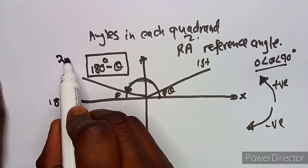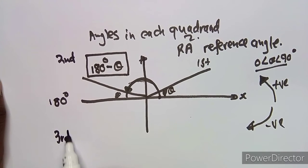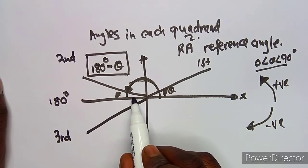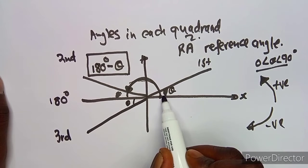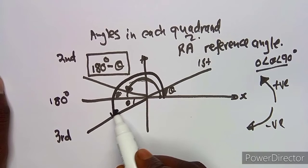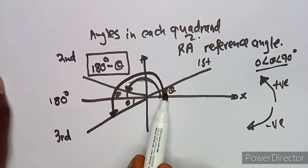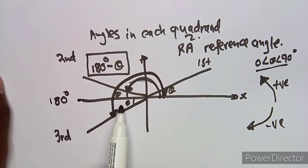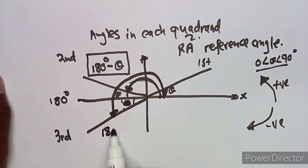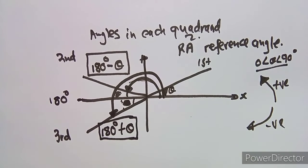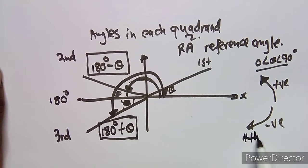In the third quadrant, the small theta is your reference angle, and the actual angle is taken from the positive horizontal axis going in this direction. We have passed 180 degrees and we include theta as part of the angle, so the actual angle in the third quadrant is 180 degrees plus theta — you add this time.